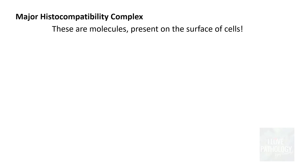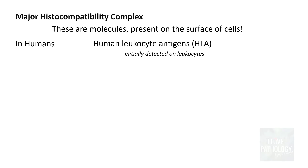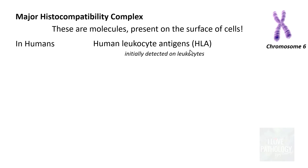So what is the major histocompatibility complex? These are molecules which are present on the surface of cells. In humans they were initially detected on leukocytes, which is why they are also referred to as human leukocyte antigens. The genes which encode the major histocompatibility complex are called human leukocyte antigens, and they are present on chromosome number 6, particularly the short arm of chromosome 6.